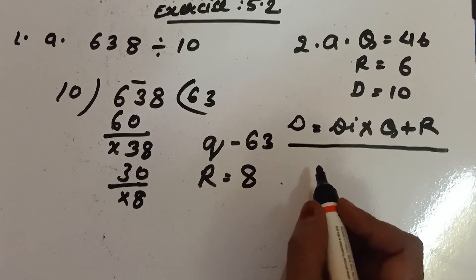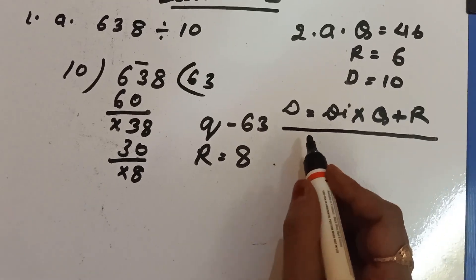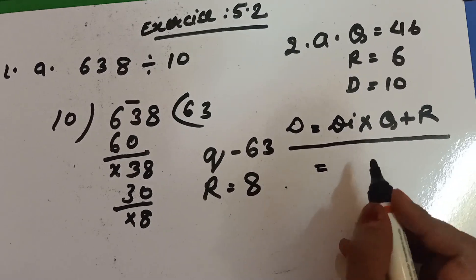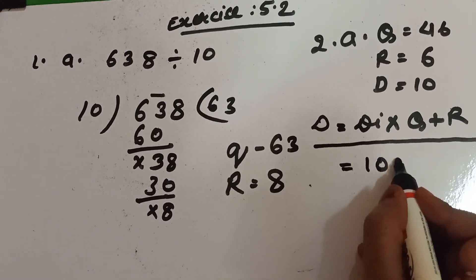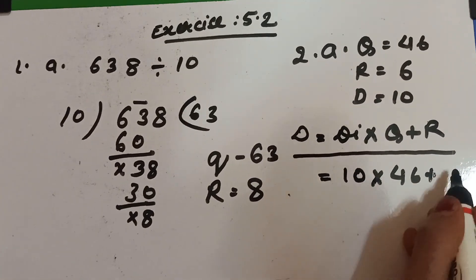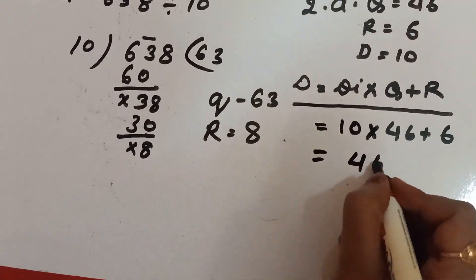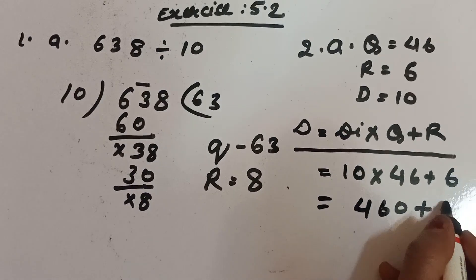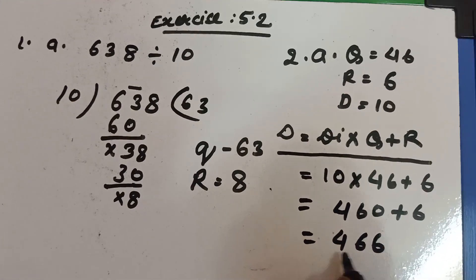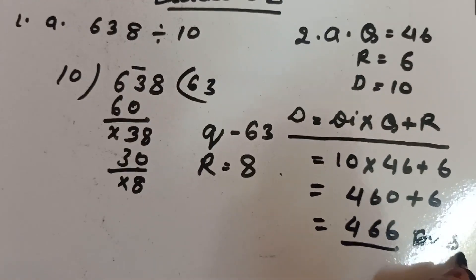What is given? Quotient is 46, remainder is 6, and divisor is 10. We have to find the dividend. So we write: divisor × quotient + remainder = 10 × 46 + 6 = 460 + 6 = 466. So the dividend is 466, and that is the answer.